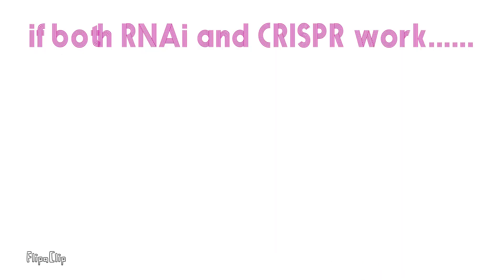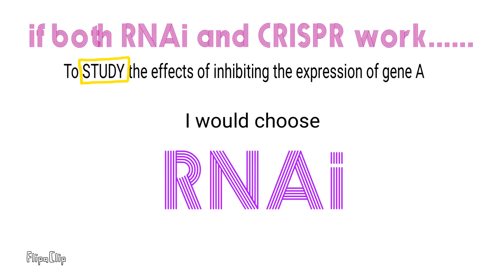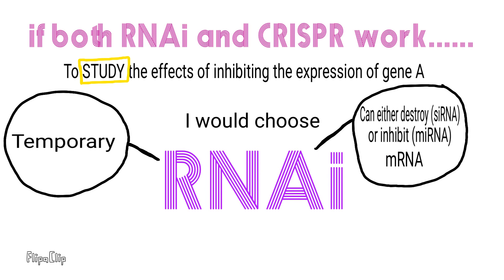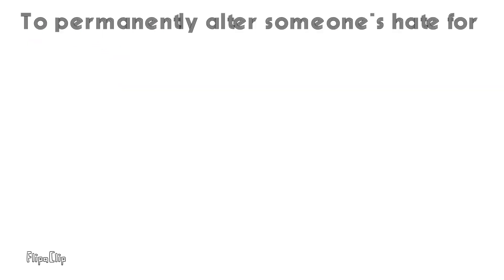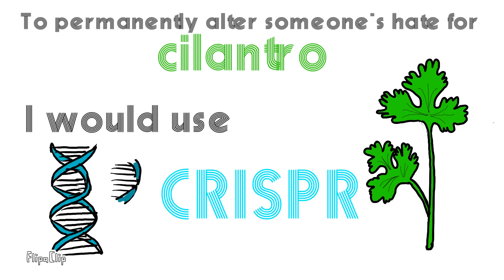If both methods work and I want to study the effects of inhibiting gene A, I would choose to use RNAi. This is because RNAi is temporary. This method also does not affect DNA, which may reduce the risk of synergistic mutation. I would use CRISPR technology to permanently alter someone's response to cilantro.